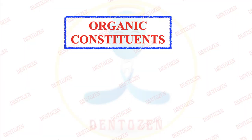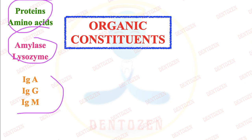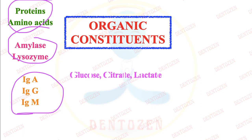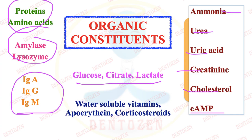Now talking about organic constituents — organic means proteins and amino acids. These include enzymes like amylase and lysozyme, immunoglobulins in saliva, glucose, citrate, lactates, and other organic constituents like ammonia, urea, uric acid, creatinine, cholesterol, cyclic compounds, vitamins, water-soluble vitamins, apoferritin which is our vitamin B12, intrinsic factor, and corticosteroids.